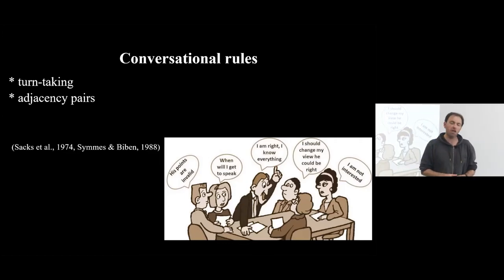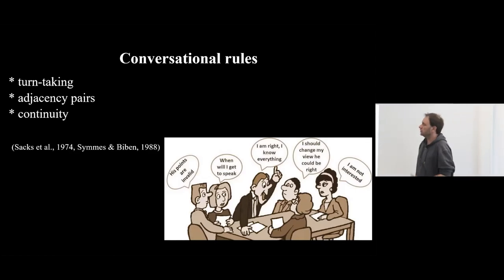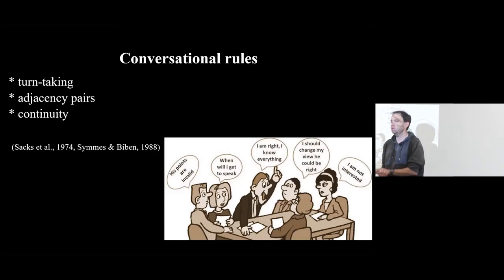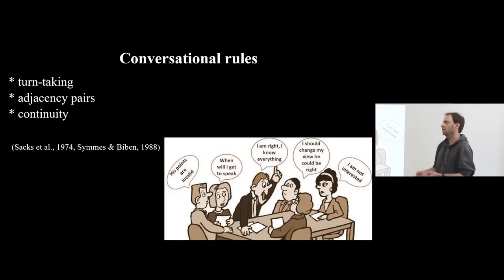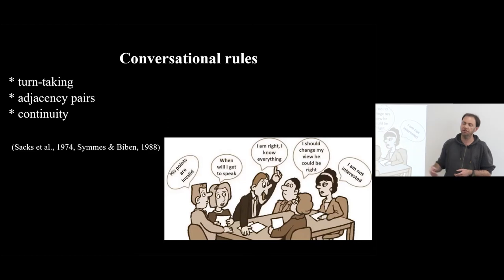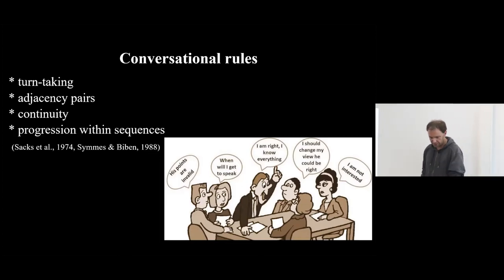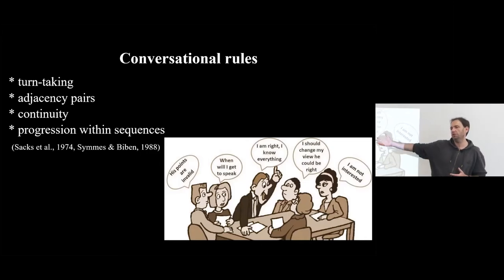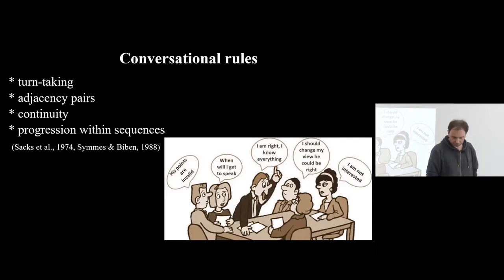When we converse, we address a specific person or group of individuals. Continuity is also an important aspect — there are several exchange turns going on, and we invest a lot of effort in keeping this interaction going. We can add detail, exaggerate, and we expect the other party to respond and contribute, so it's not just a simple question and answer. And the last criterion is progression within a sequence — there's a direction; signals change depending on what has been said before.